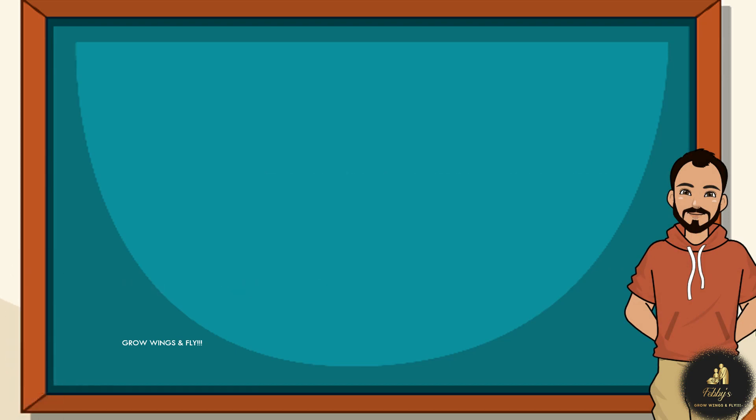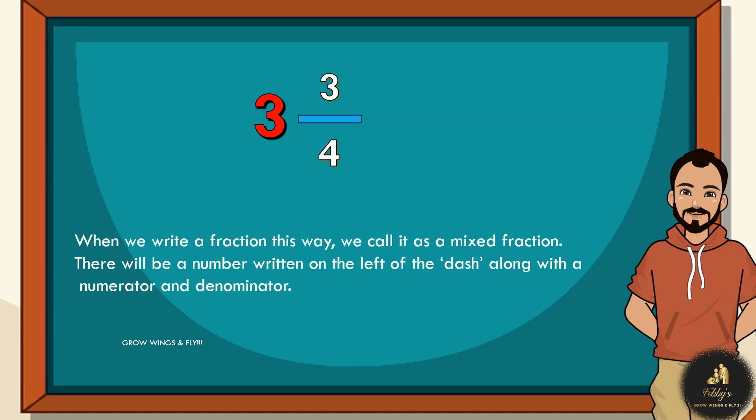Now, in order to know mixed fractions, this is how we write it. So, there is this big number, as you see there, and then you've got a numerator, and then a denominator. So, these numbers are called mixed fractions. There will be a number written to the left of the dash, and then a numerator and denominator.